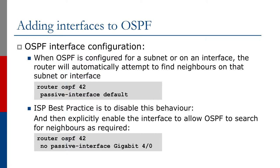To add interfaces in OSPF, we look at how we configure OSPF defaults. We start the OSPF process and mark all interfaces as passive by default. This prevents OSPF from automatically trying to find a neighbor on every single interface. The ISP best practice is to then activate OSPF only on specific interfaces where we want to find adjacencies.